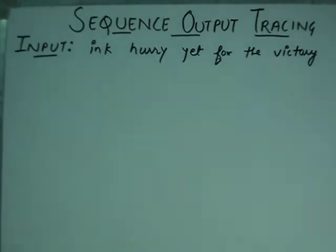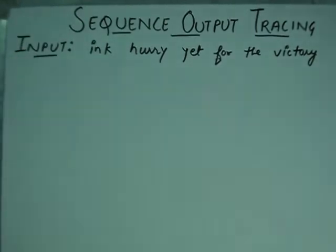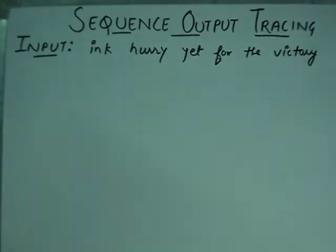Suppose we have an input like: 'yet ink hurry for the victory.' What can we predict from this? We have to analyze the pattern. As we discussed in sequence output tracing, we have some steps. Based on them, we get our final output and according to them, we are going to calculate various questions — we have to analyze the pattern and the question.